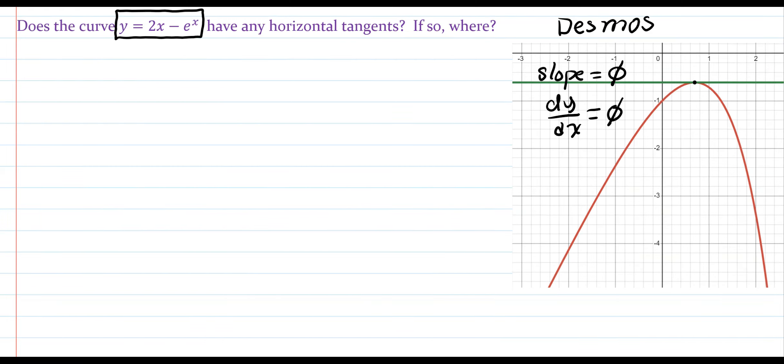So the derivative, which notation-wise we would say the derivative of y with respect to x, that's dy dx, will equal to, in this case, we just used the difference rule. So the derivative of 2x is 2 and minus the derivative of e to the x is e to the x.